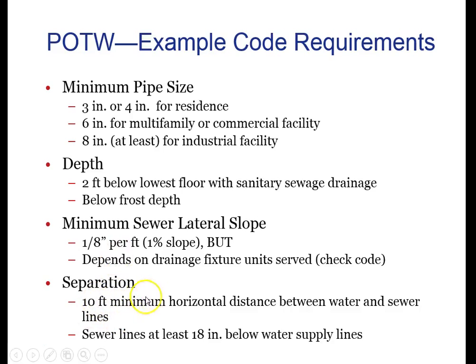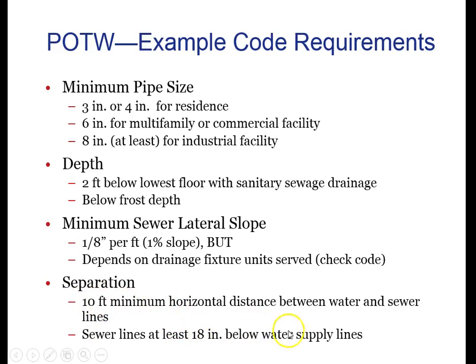There has to be a 10-foot distance between the good water pipes and the bad water pipes. We don't want tree roots or someone driving across your lawn crushing both pipes and allowing cross-contamination. Even within that 10-foot separation, the bad water pipe has to be 18 inches below the good water pipe. Since water sinks down when pipes break, keeping them 10 feet apart horizontally and the good water 18 inches higher vertically greatly reduces the chance of cross-contamination.